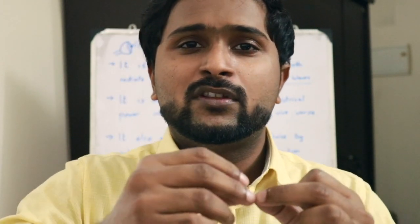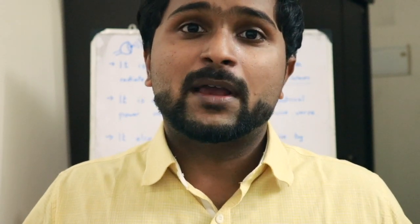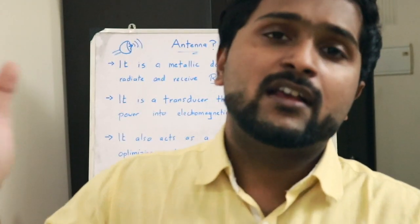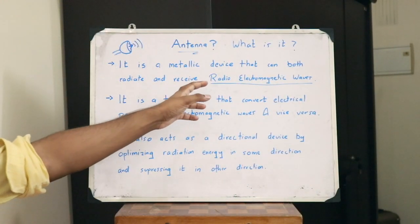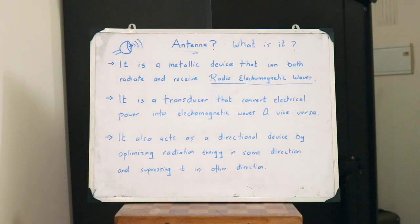So what basically is an antenna? An antenna is nothing more than a metallic device that can both receive as well as transmit electromagnetic radio waves. Any metallic device that can both transmit and receive electromagnetic waves is referred to as an antenna. It is a metallic device that can both radiate as well as receive electromagnetic waves.